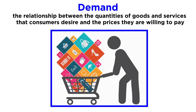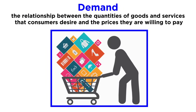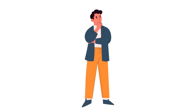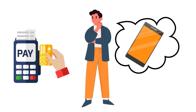Let's begin by looking at demand. Demand is the relationship between the quantities of goods and services that consumers desire, or demand to consume, and the prices those consumers are willing to pay for those goods and services at different quantities. So demand has to do with the desire to buy something, and the ability to pay for it. Both must be present.